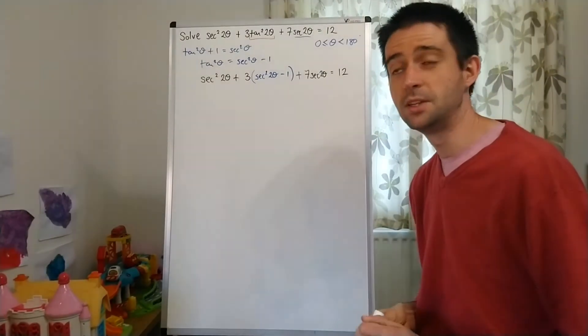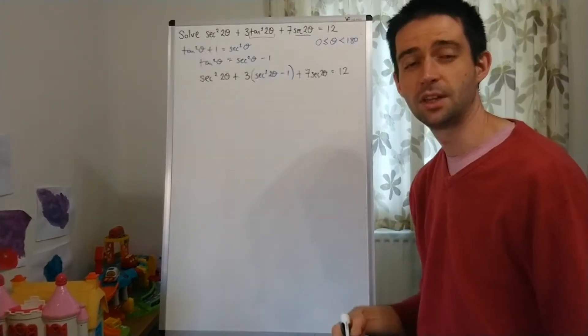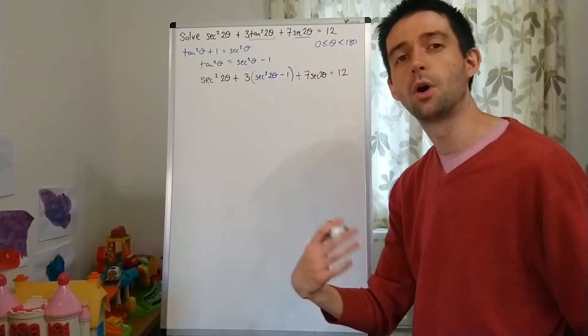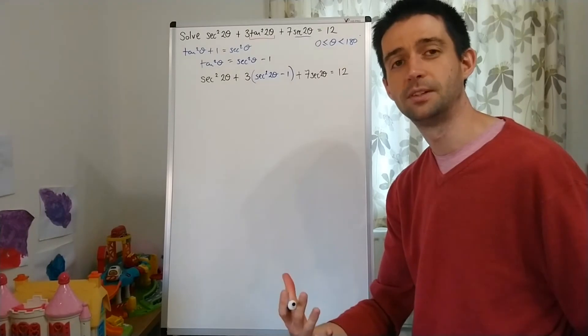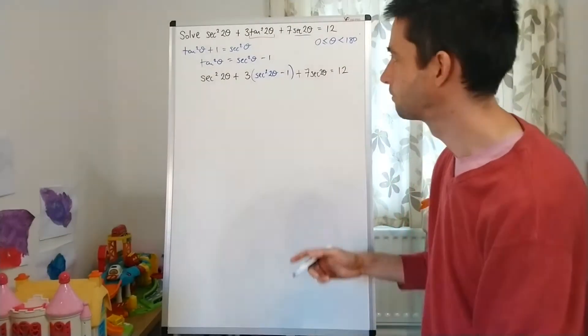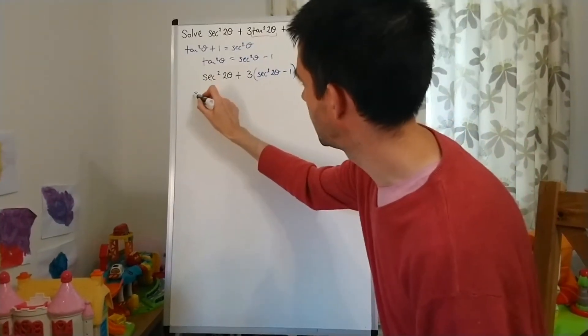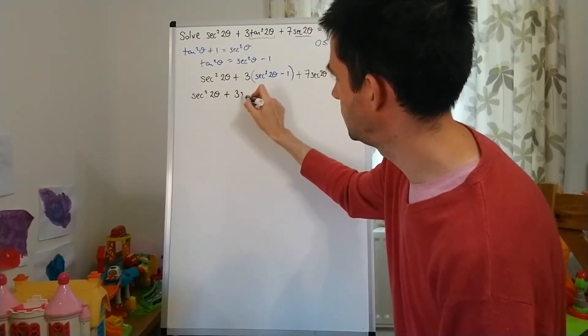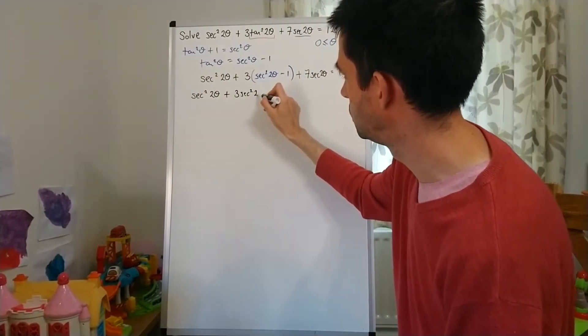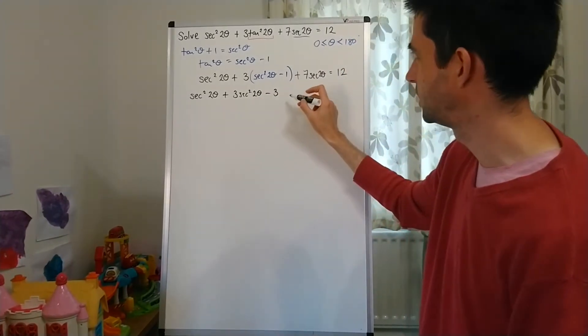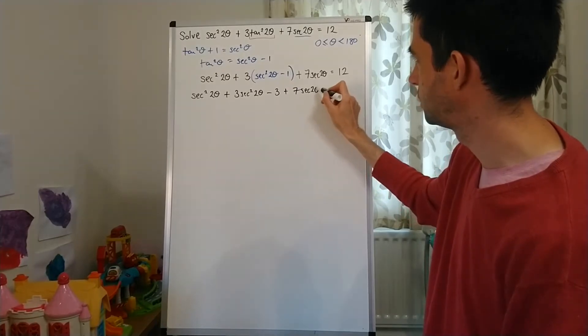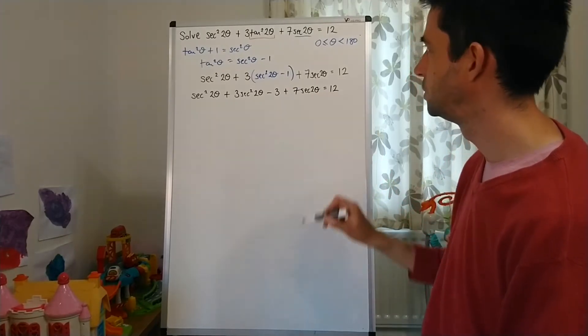And what I'm now going to do is to expand and simplify that into a form that I can solve. And you might just like to think, what kind of equation are we going to get from doing this? So sec²2θ + 3sec²2θ - 3, that's expanding that bracket out.